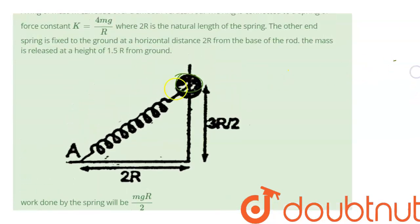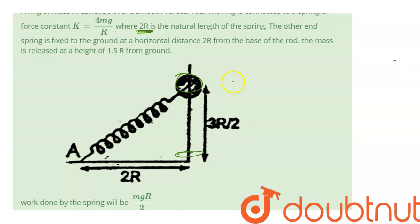The work done by the spring — since the elastic force is a conservative force — we don't need to worry about what happens between the time the ring is at the top and when it reaches the bottom. Notice that the natural length of the spring is 2r, so when the ring reaches the bottom the spring returns to its natural position, and when the ring is at the top the spring has been stretched.